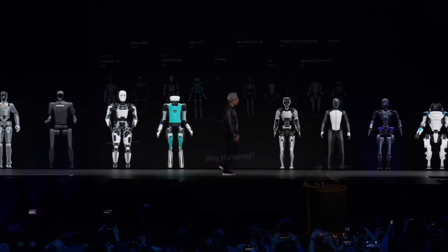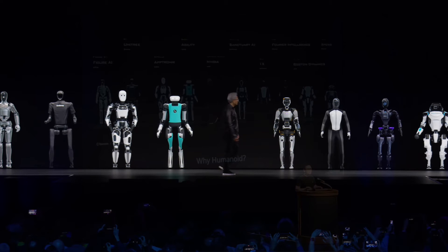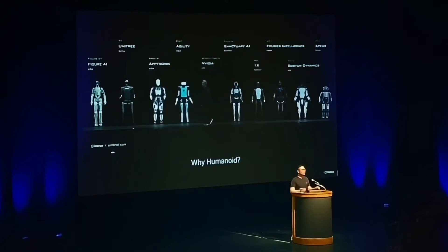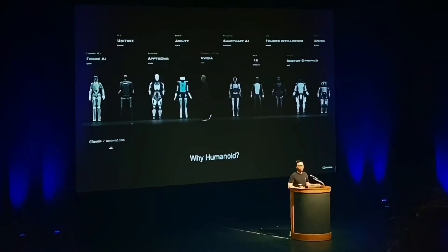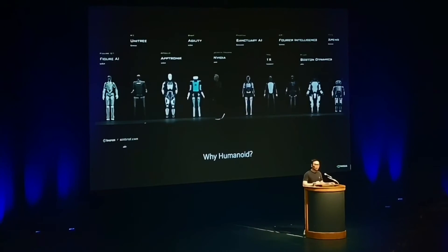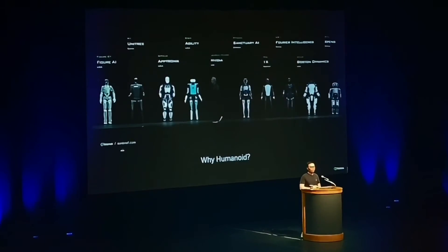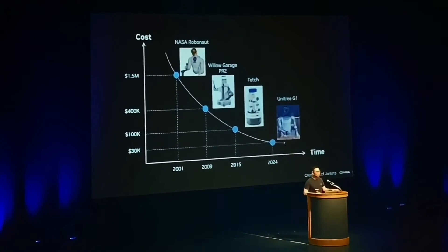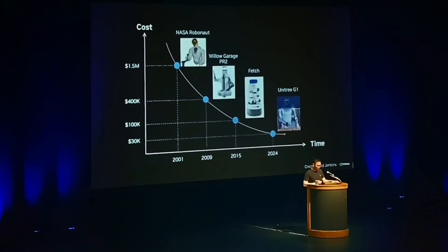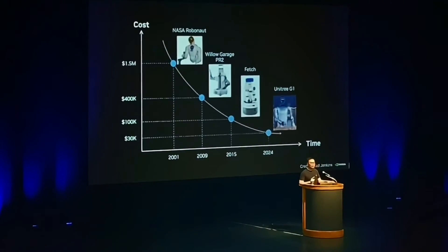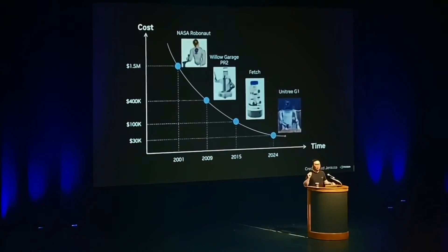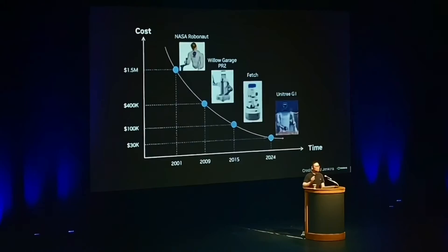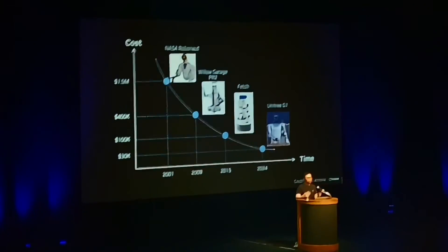Why humanoid? Because it is the most general purpose form factor. The world is designed around the human form. All our tools, equipment, houses, restaurants, they're all designed for humans. In principle, given a good enough humanoid hardware, it should be able to do anything that a reasonably untrained human can do. So we just aim for the most general purpose hardware. Why do it now? Because we see the manufacturing cost of humanoid robots dropping exponentially over time. In 2001, the NASA humanoid cost north of $1.5 million. Just two weeks ago, Unitree announced their G1 robot that will only cost $30,000. That's roughly the price of a car. The manufacturing cost of mature products will tend to approach the cost of the raw materials.